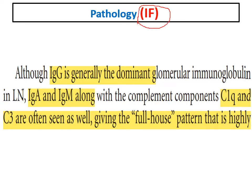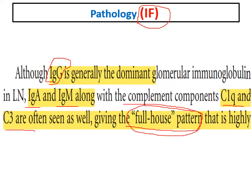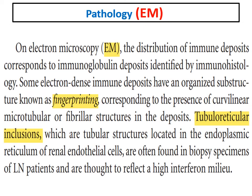On immunofluorescence, the dominant immunoglobulin is IgG, but we can also find IgA, IgM, and complement components especially C1q and C3. Most of these will be present simultaneously, giving what is known as the 'full house pattern' — very characteristic of lupus nephritis. Full house means most immunoglobulins and complement are deposited in the glomeruli: IgG, IgA, IgM, C1q, and C3 — all positive.